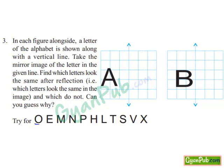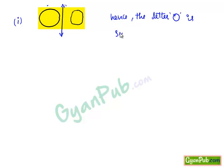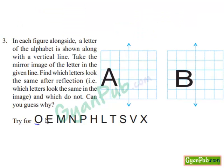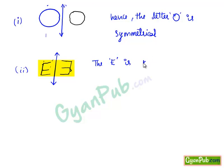Let's take O. For the letter O, the mirror image will be the same as O. Hence the letter O is symmetrical in nature. Now seeing E — if we take E in the mirror image, we get a reversed form. Hence E is not the same as E in its mirror image. Therefore the letter E is not symmetrical.